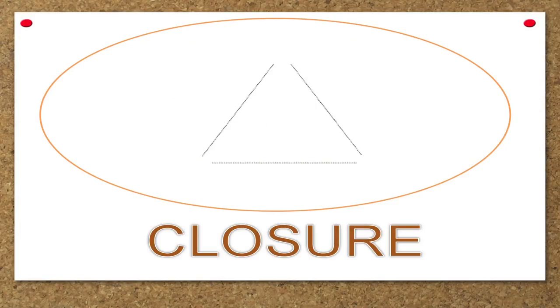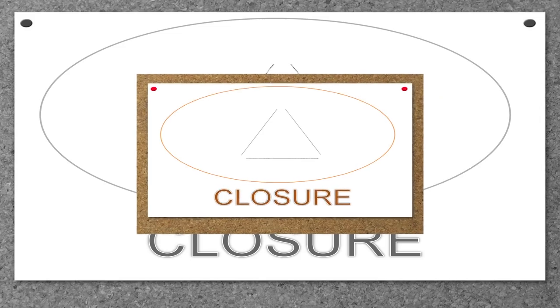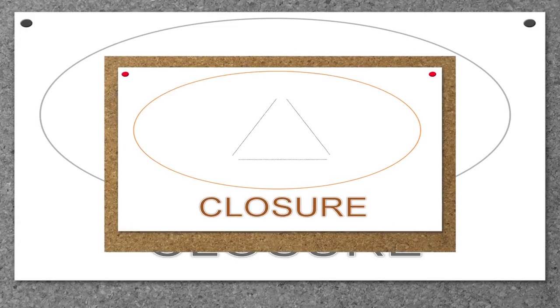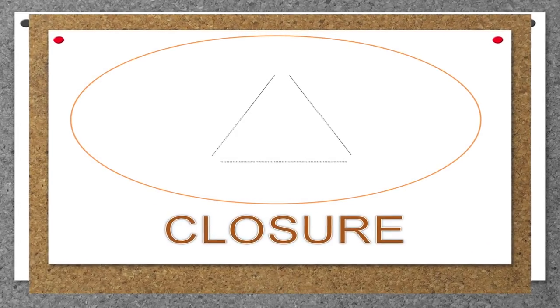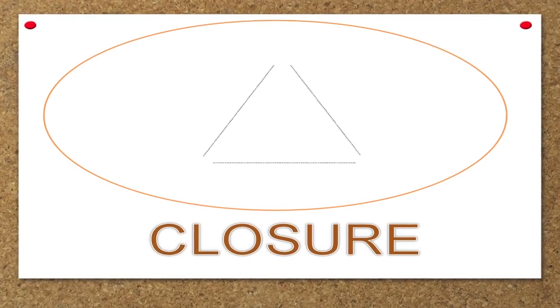Closure is the next law of perception. An incomplete figure will be seen as a complete one. For example, the following figure consists of incomplete lines that have gaps in them, yet it is perceived as a triangle despite the fact that its sides are incomplete — we have the tendency to close the sides or ends. A closure-like phenomenon yields subjective contours: in this figure of a triangle, the lines forming the triangle do not actually exist, yet it is still compelling to perceive a triangle.